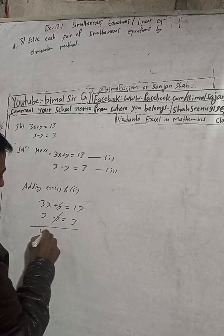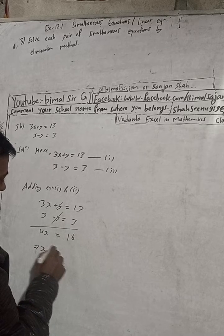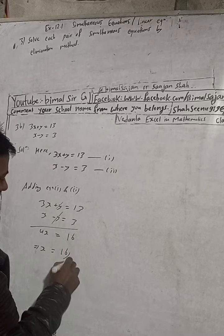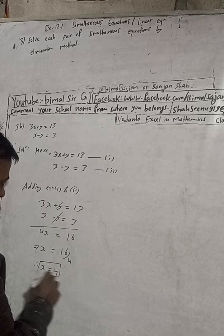plus x here, so this is 4x is equal to 13 plus 3, which is 16. This implies x is equal to 16, and this 4 will be divided here. Therefore, x is equal to 4. Now I got x equal to 4.